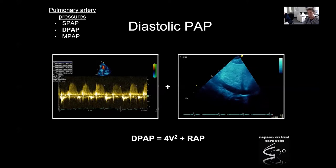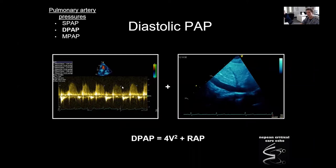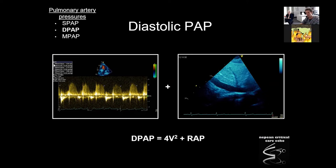I don't use a lot of these other measures in my day-to-day practice, but they're useful for exams. For diastolic pulmonary artery pressure, we use the end-diastolic pressure from the pulmonary regurgitation jet — four V squared of that gives the pulmonary regurgitation pressure gradient — then add on right atrial pressure. The evidence behind this in the critically ill is not really there. I mainly use systolic pulmonary artery pressure and pulmonary resistance.